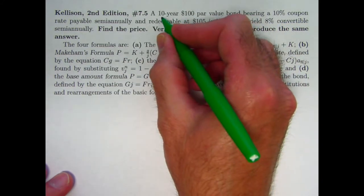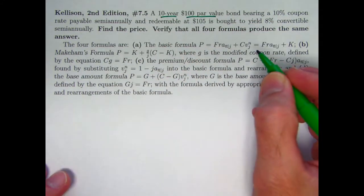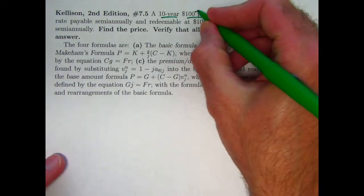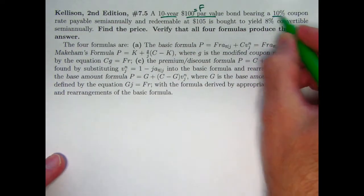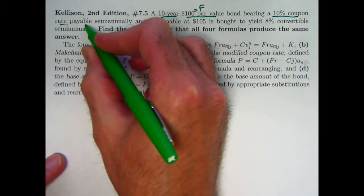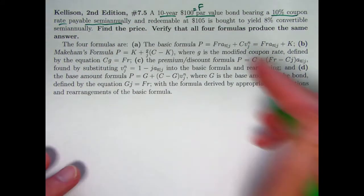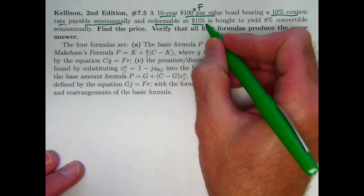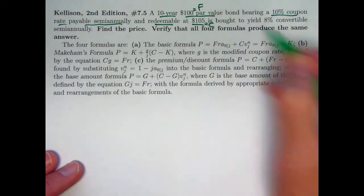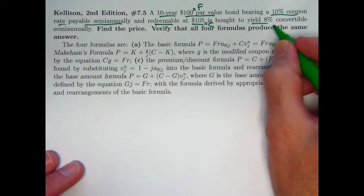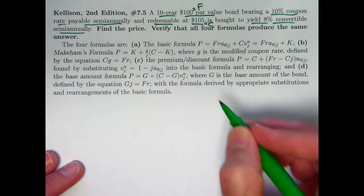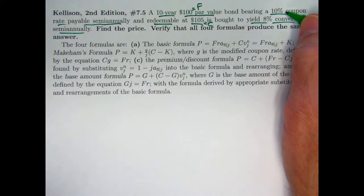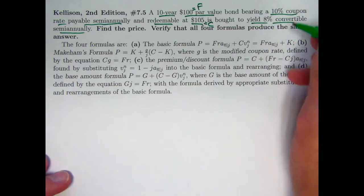So we have, again, a pretty basic situation. 10-year bond. It's got a $100 par value, also called the face value, denoted by capital F. It's got 10% coupons that are payable semi-annually, twice a year, like usual. It's redeemable at $105, a price that's different than the face value, which again is unusual, but does happen sometimes. We'll call that C. It's bought to yield 8% convertible semi-annually, again like usual. So the effective semi-annual coupon rate is going to be half of this, 5%, and the effective semi-annual yield rate is going to be half of this, 4%.